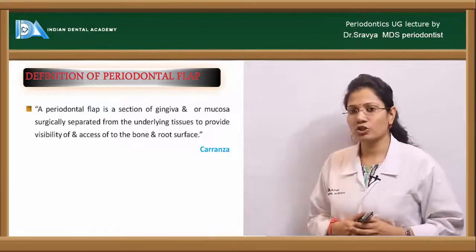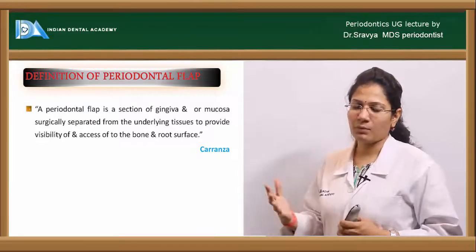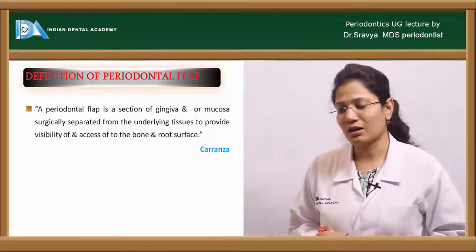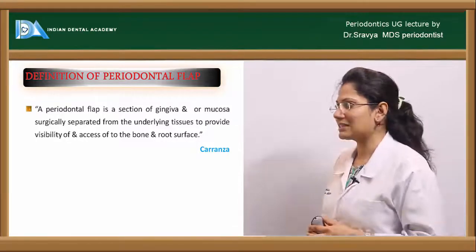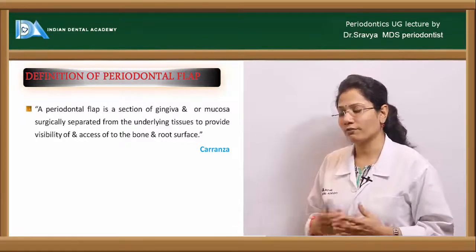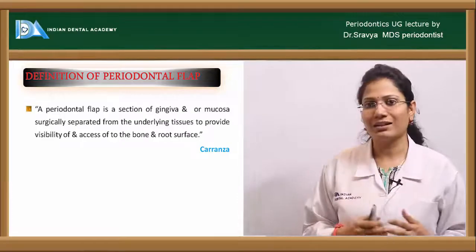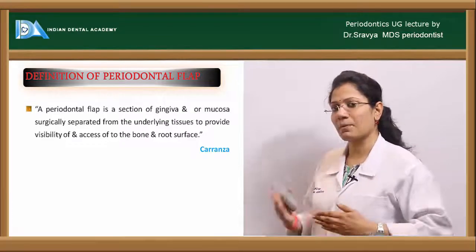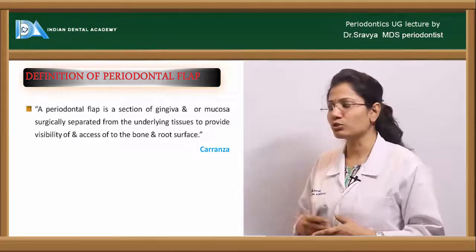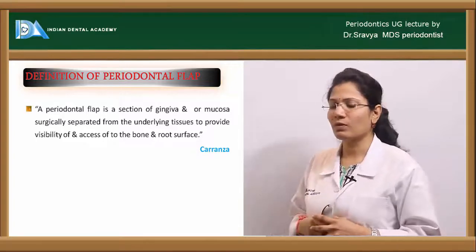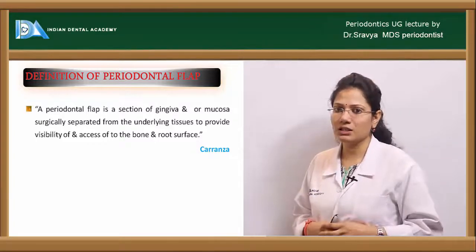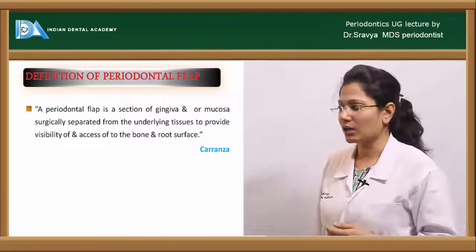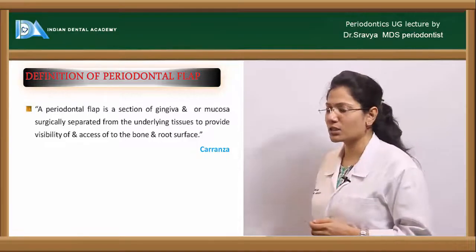What is the definition of a flap? The periodontal flap can be defined according to Carranza as a section of the gingiva or the mucosa that is surgically reflected or separated from the underlying tissues in order to provide visibility of and access to the bone and the underlying root surface.